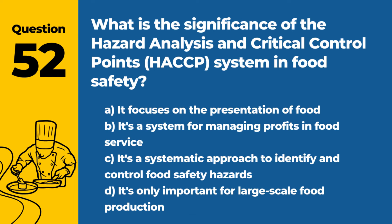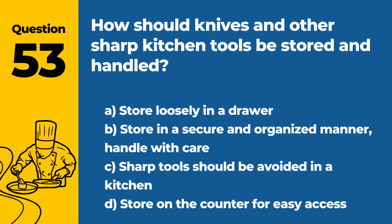Question 52. What is the significance of the Hazard Analysis and Critical Control Points (HACCP) system in food safety? a. It focuses on the presentation of food. b. It's a system for managing profits in food service. c. It's a systematic approach to identify and control food safety hazards. d. It's only important for large-scale food production. Answer c. It's a systematic approach to identify and control food safety hazards. HACCP is significant in food safety as it provides a systematic approach to identify, evaluate, and control food safety hazards from production to consumption.